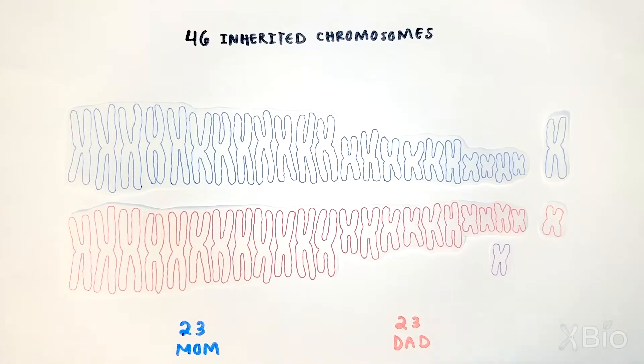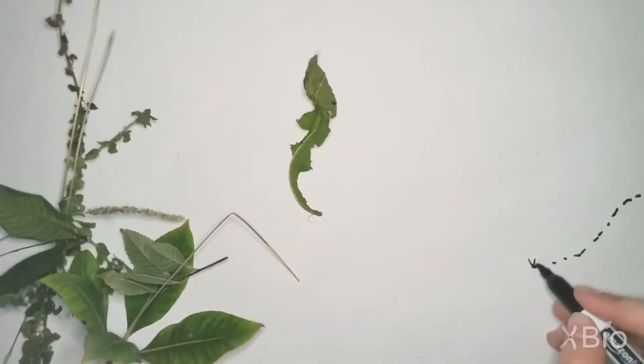Different organisms have different numbers of chromosomes. Some plants have hundreds of chromosomes, and some ants have only one pair.